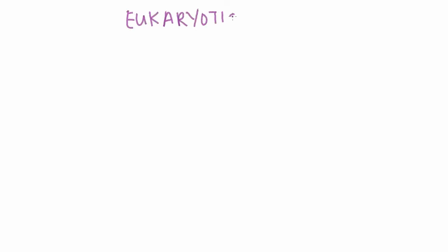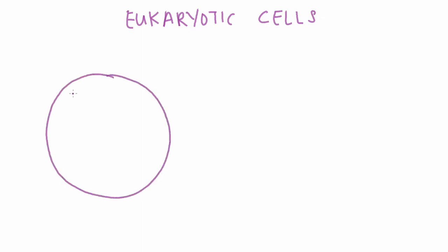Welcome back. Today, we will be following the journey of a protein through the various organelles in a eukaryotic cell. Eukaryotic cells contain a nucleus and several membrane-bound organelles that perform different functions for the cell. To start, let's follow the journey of a protein through the cell.